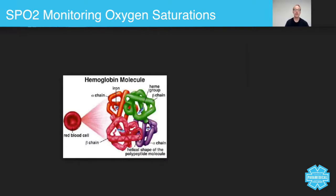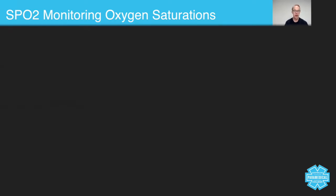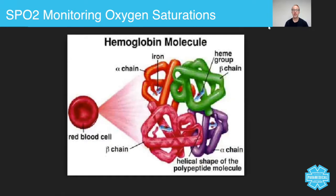Let's talk about what an SpO2 monitor measures. The SpO2 monitor uses two different types of lights — red and infrared — to measure the amount of oxyhemoglobin in the blood.